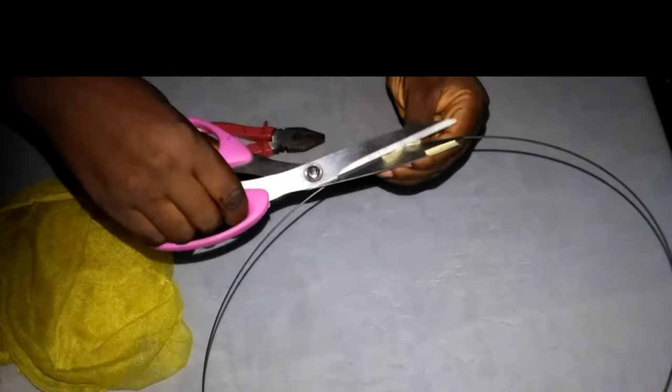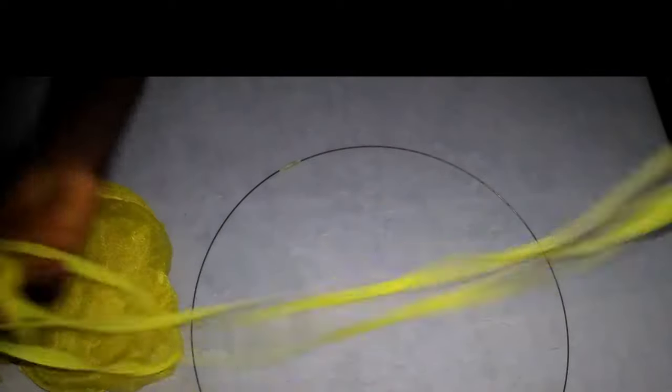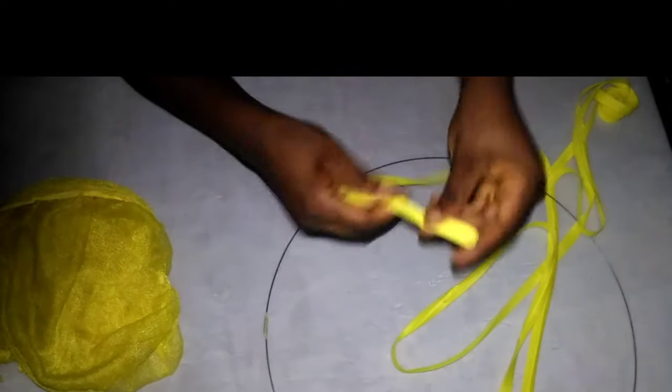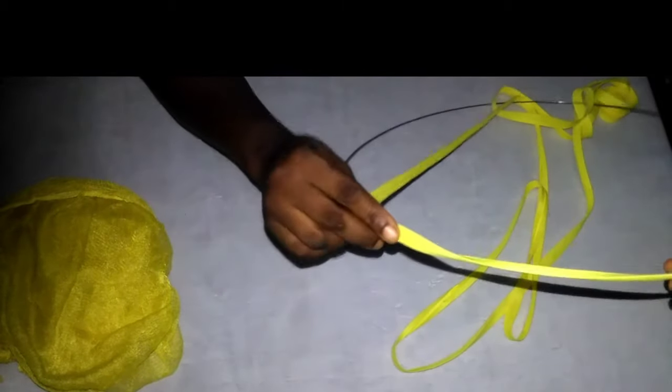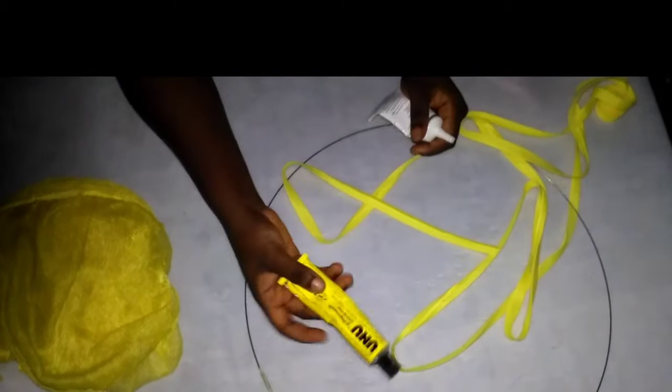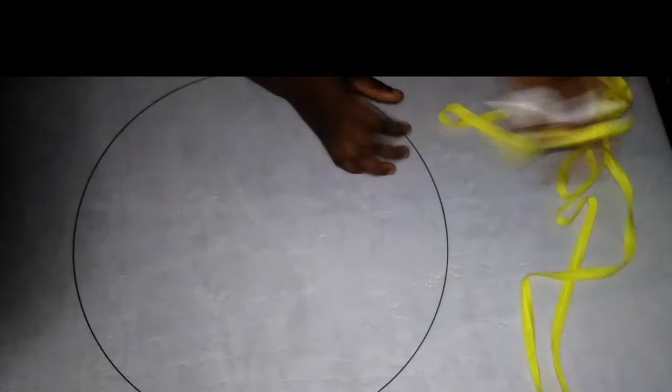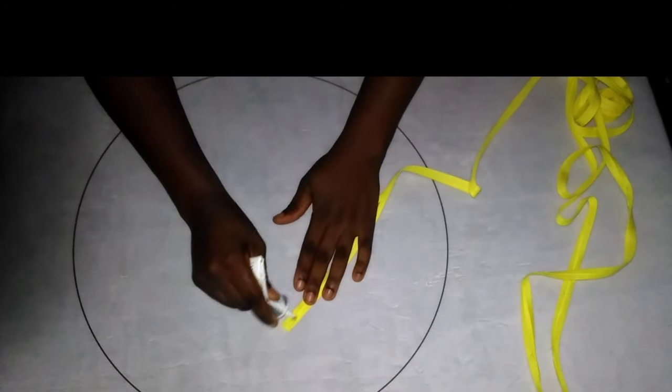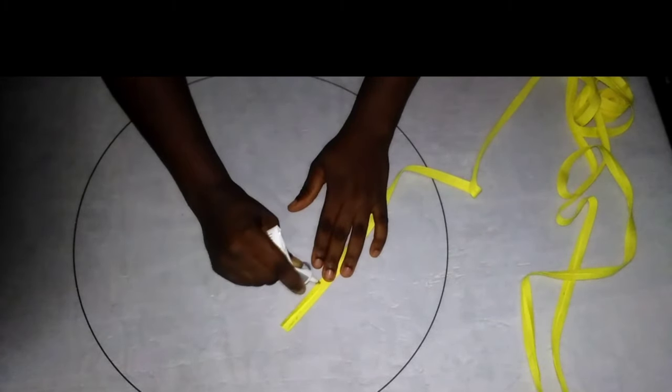The next thing is to use bias to cover up the wire. Bias are used by tailors. Ensure you use a matching colored bias to cover up your wire. You can use usu gum or B6000, but here I'll be using B6000. The reason is because bias is tiny, and if I use usu gum it will dirty my work. I'll rub it on the bias, then wrap it up.